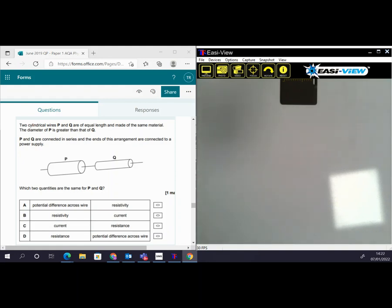This question is testing understanding of resistivity and the properties of components when combined in series. So we have two cylindrical wires of equal length, same material, damage of p is greater than q, and we have that p and q are connected in series and the ends of this arrangement connected to a power supply.